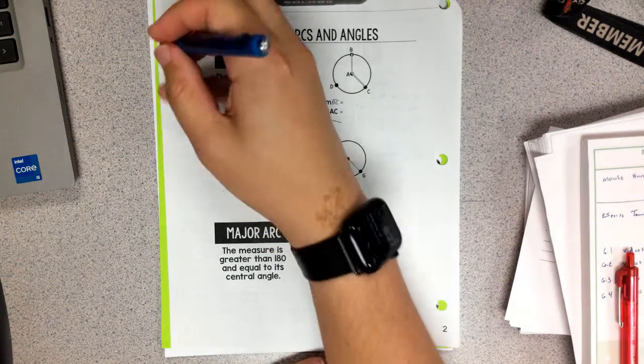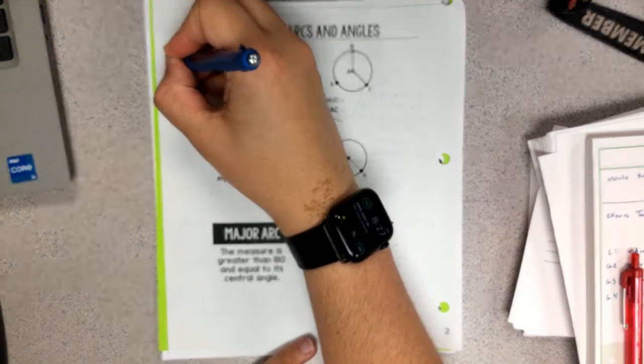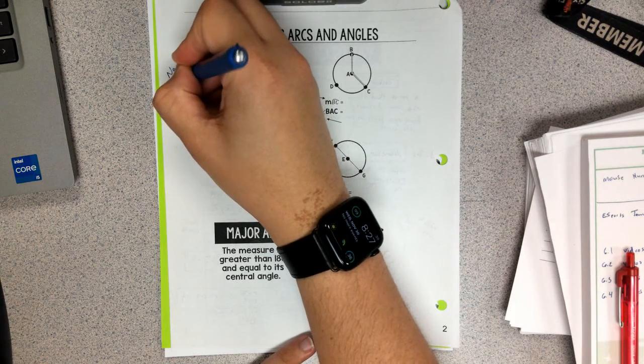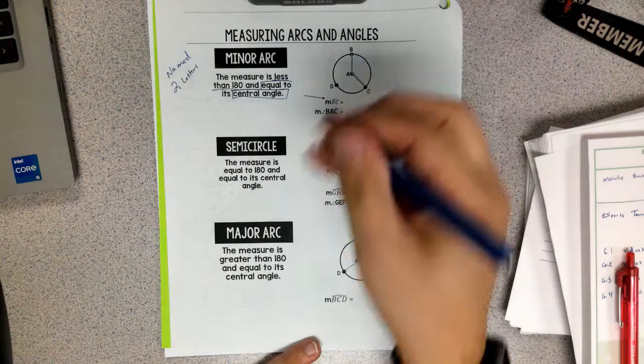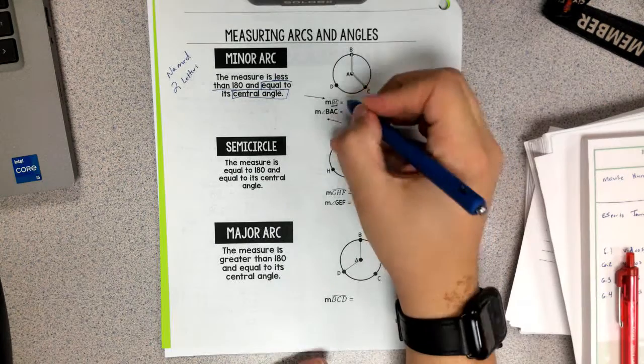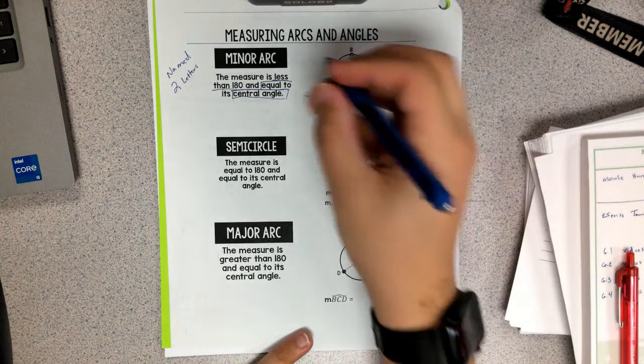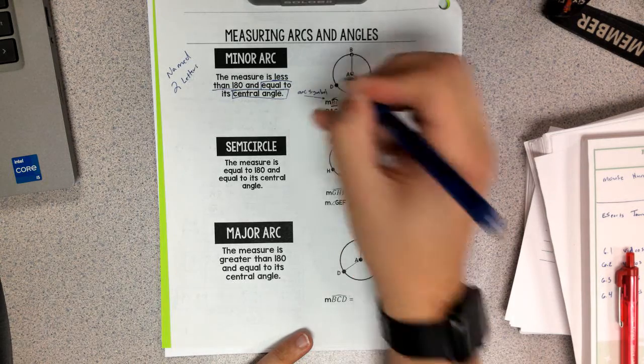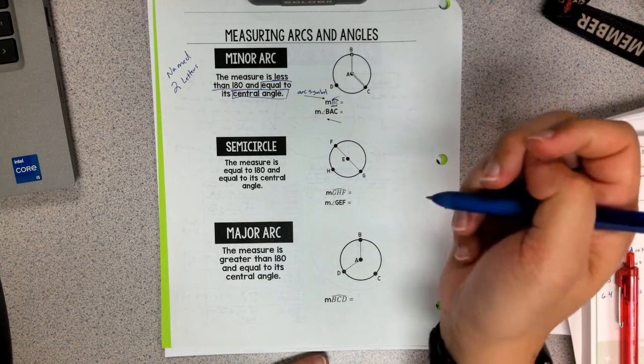Now, I want you to write your note and know that minor arcs are named with two letters. So if you see two letters, like here, and you see an arc on top, like here, that is going to be our arc symbol. Then you know that that's a minor arc.